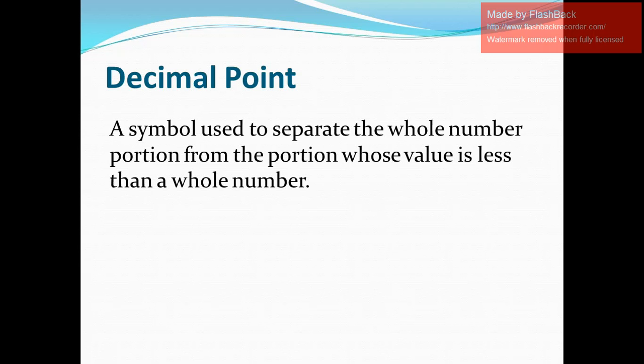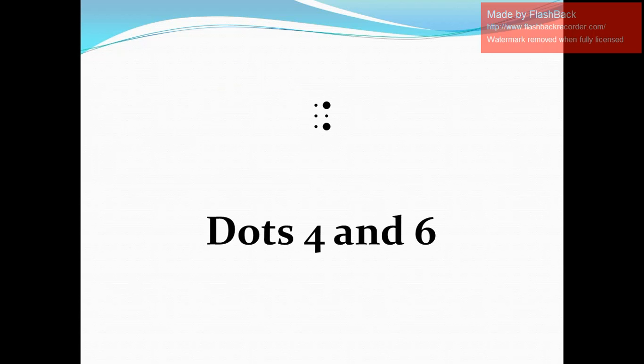To the left of the decimal point is the whole number portion, and to the right are the digits whose value is less than one. In Nemeth Braille Code, the dot configuration of the decimal point consists of dots 4 and 6, which are both located on the right column of a braille cell.